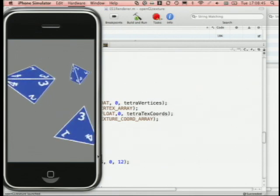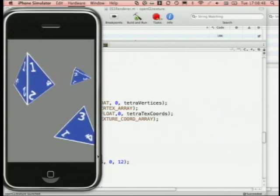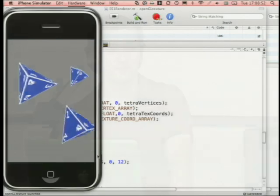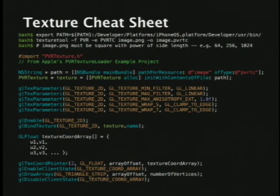Running it now gives us textured tetrahedrons — and they're awesome. The texture cheat sheet is significantly more complicated to get set up and running. If you try to load in a PNG texture you have to go through more hoops and it's slower. I'd strongly recommend using the Apple demo code — it's great.